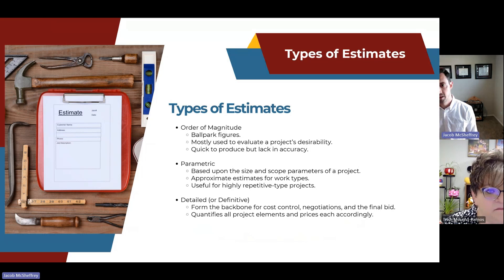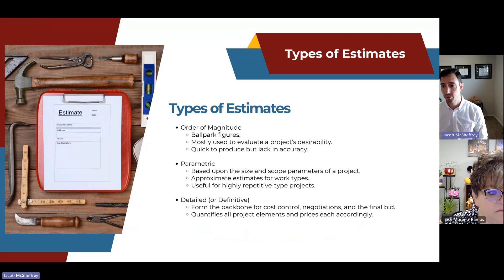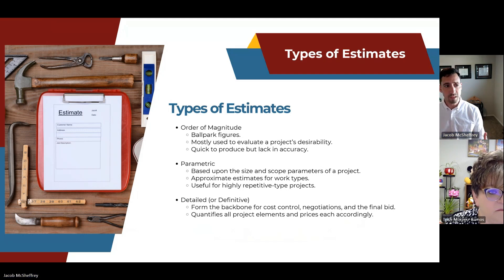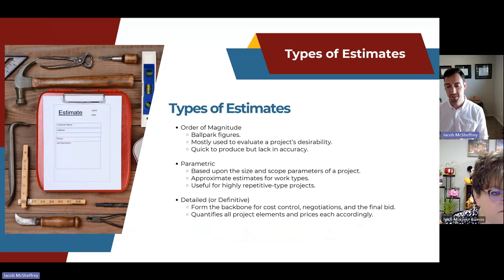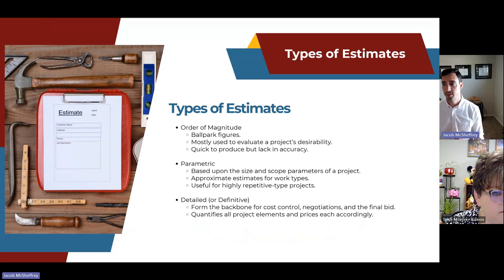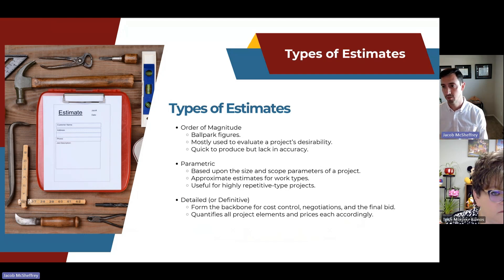There are a few different types of estimates. Order of magnitude estimates are ballpark figures mostly used to evaluate a project's desirability — they're quick to produce but lack accuracy. This is what you'd use to decide whether you even want to put in the time to do a formal estimate or proposal. Depending on the estimator's experience, magnitude estimates can be accurate somewhere between negative 35% to positive 50%.